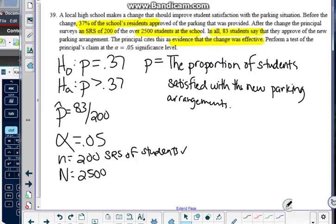200 samples, 200 random sample. My 10% condition was that 200 is indeed less than 10% of the entire school's population. So that's satisfied.